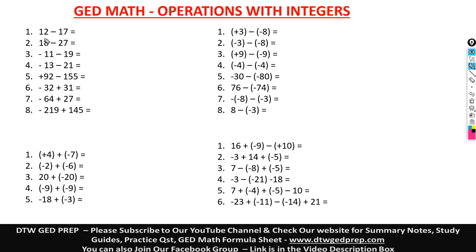So here we have 12 minus 17. When you have signed numbers, don't just take it as plain 12. There are two ways you can approach it: you can use the number line format, or you can use the rules.